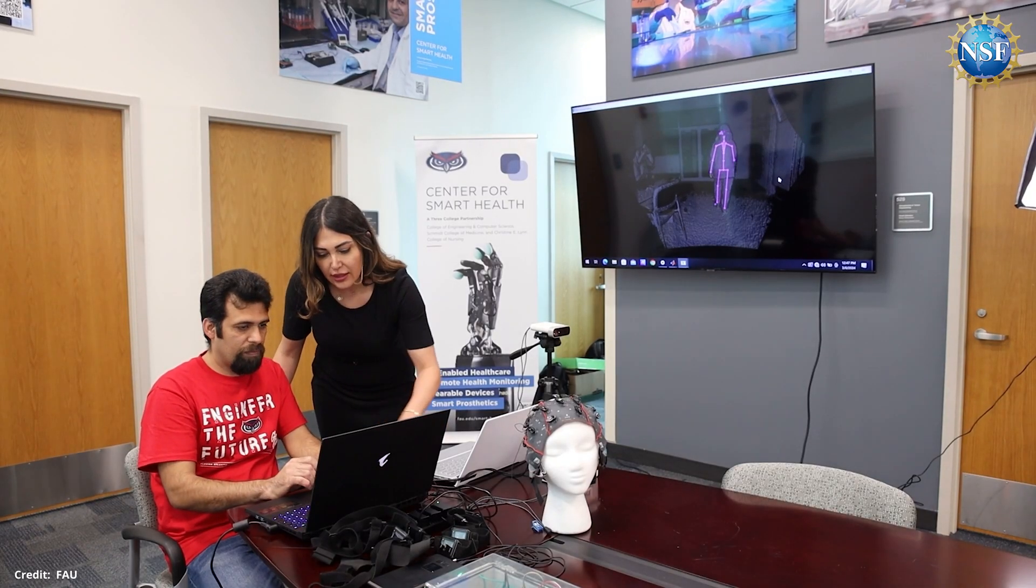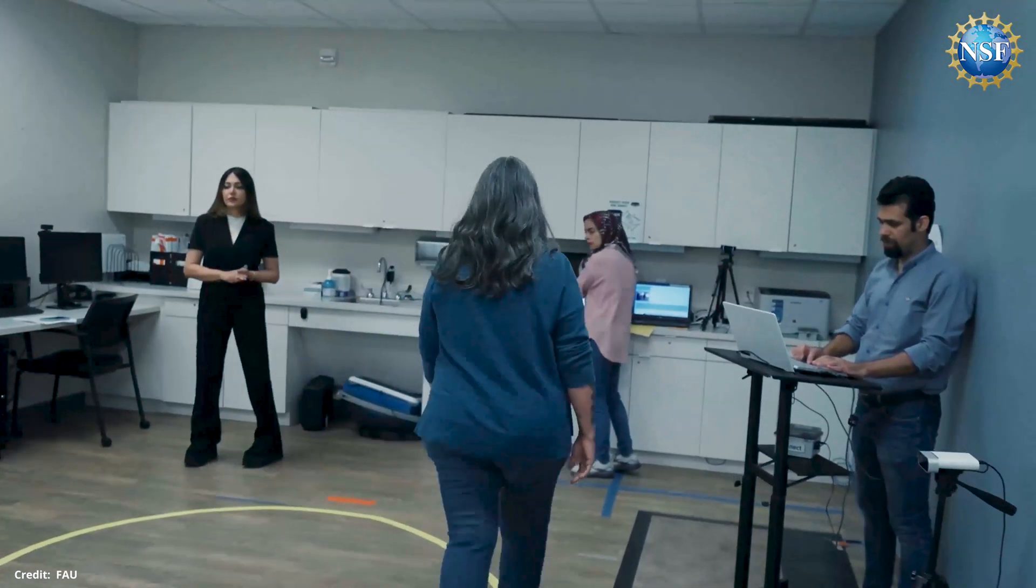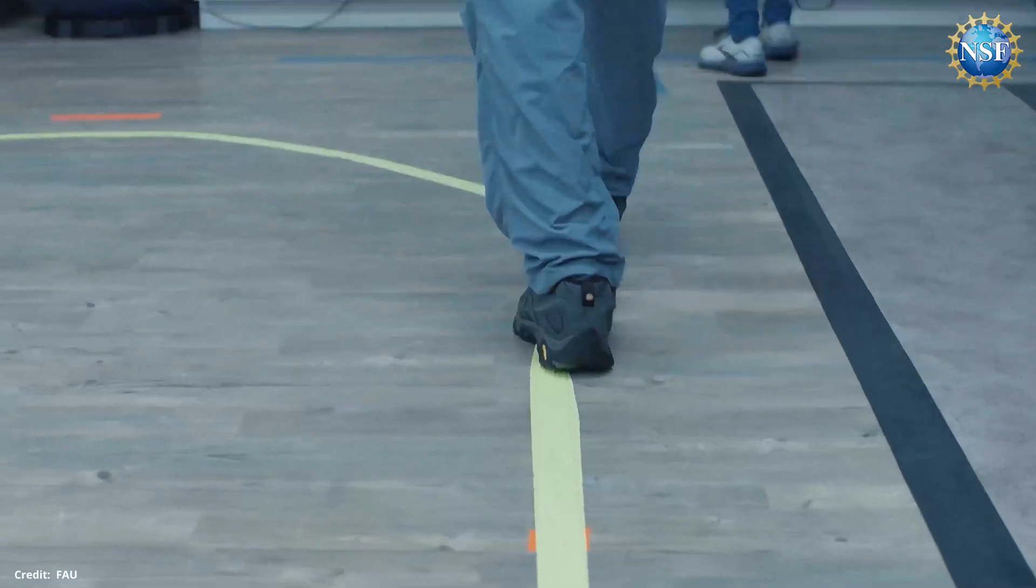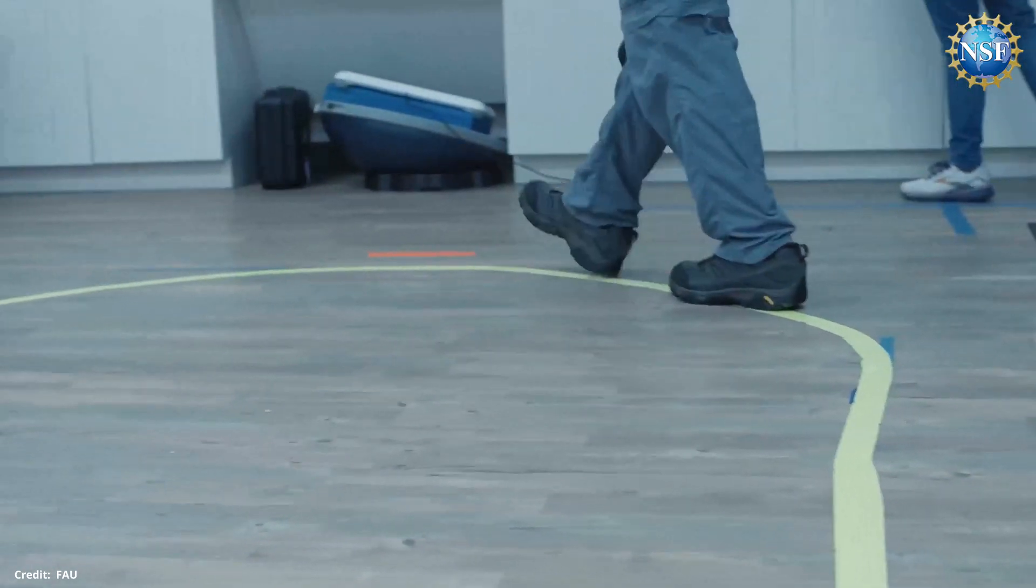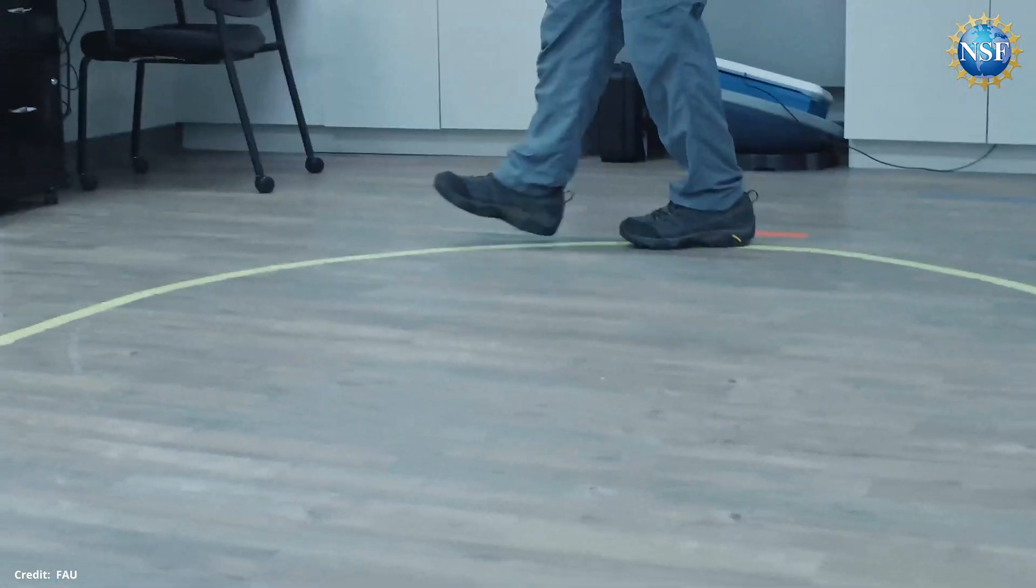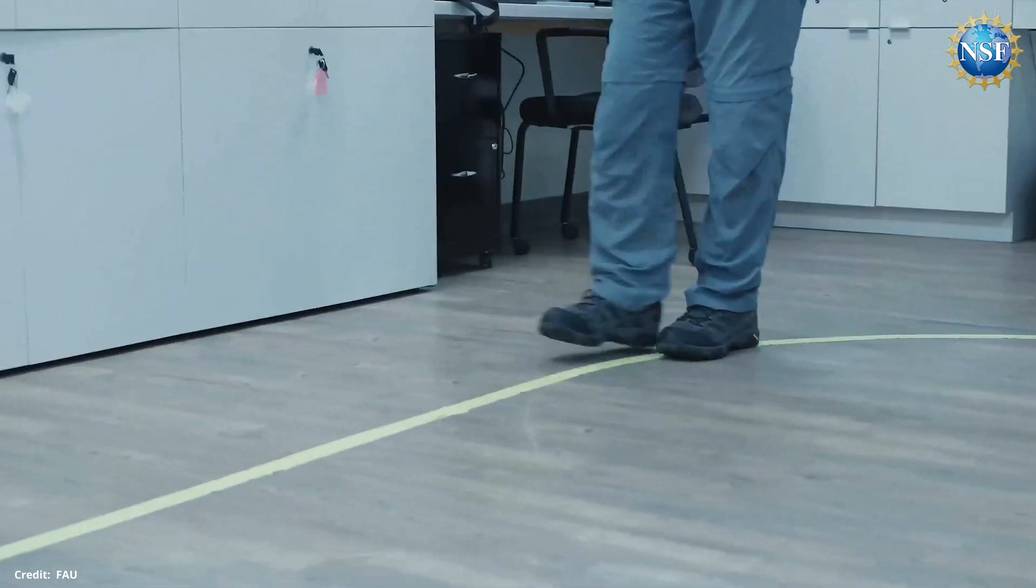The curved walking test method is unique. It takes the idea of watching someone walk, which we know can give us clues about problems with brain health, and adds a twist to it. By having people walk in a curve or circle, it adds a particular load to the brain.